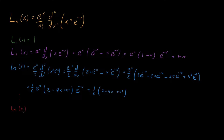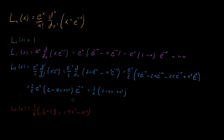For n equals 3 you get 1 over 6 — corresponding to that n factorial — times the polynomial 6 minus 18x plus 9x squared minus x cubed. The Laguerre polynomial is simply the polynomial coefficient of e to the minus x after carrying out the full derivative.